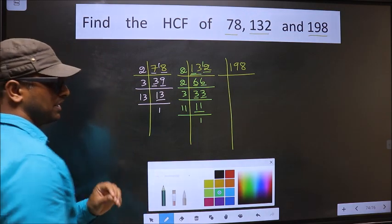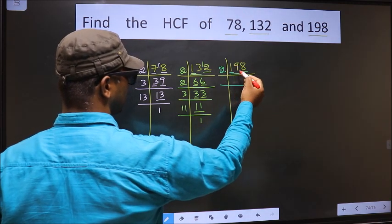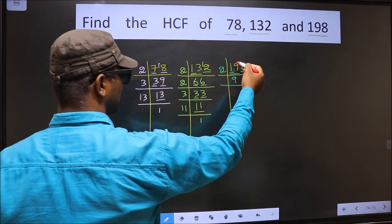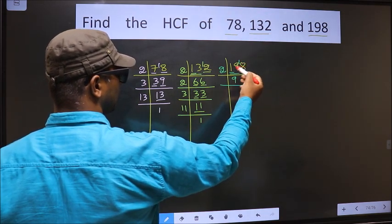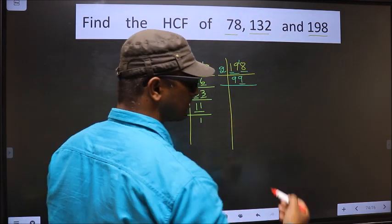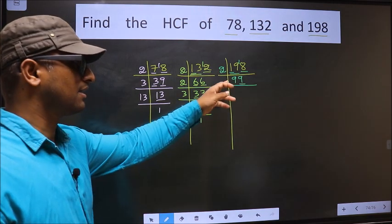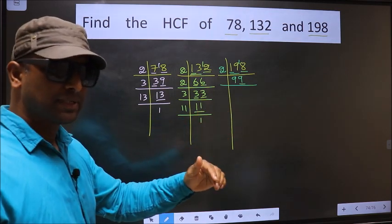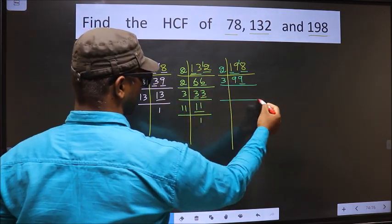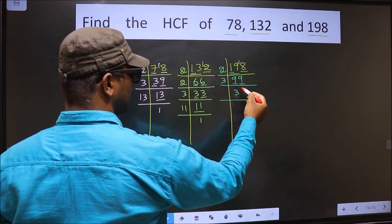Now for 198. Last digit is 8, which is even, so we take 2. The first number is 1, smaller than 2, so we take 2 digits: 19. A number close to 19 in the 2 table is 2 nines, 18. 19 minus 18 is 1, carried forward making it 18. 2 nines are 18. Now the last digit is 9, not even, so not divisible by 2. To check divisibility by 3, we add the digits: 9 plus 9 is 18. Is 18 divisible by 3? Yes. So we take 3. The first number 9: 3 threes are 9. The other number 9: 3 threes are 9.